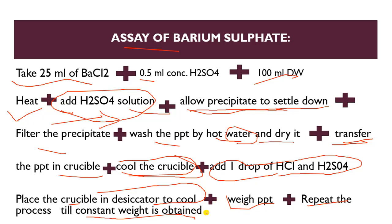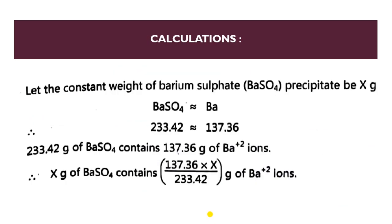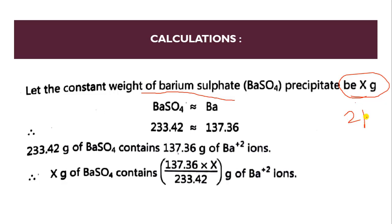After weighing our precipitate, we perform the calculation. Let the weight of barium sulfate precipitate be x g. For example, if we are getting 2 g or 1.5 g, that will be our x. So x is equal to the weight of our precipitate.